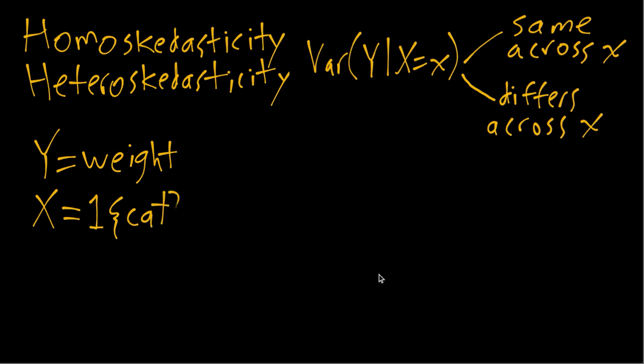If we think first about the cat subpopulation, in other words conditional on X equals 1, that means we're looking at the cat subpopulation. So this is the variance of weight among the cat subpopulation.